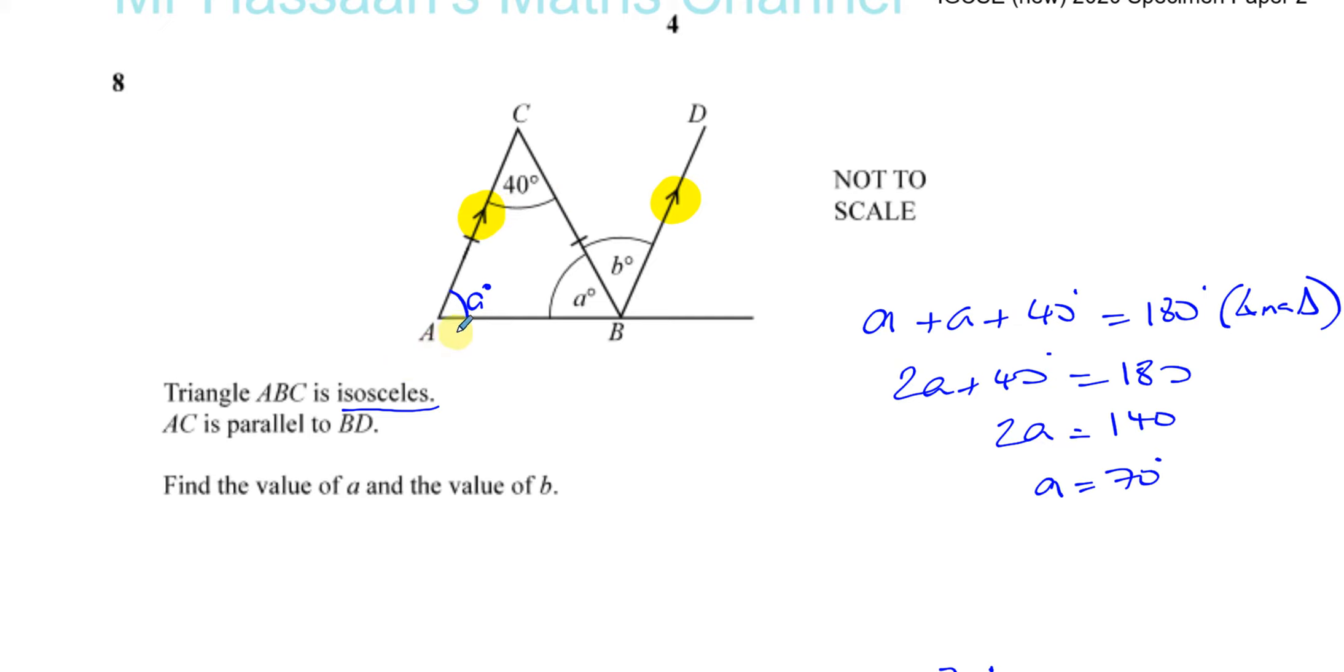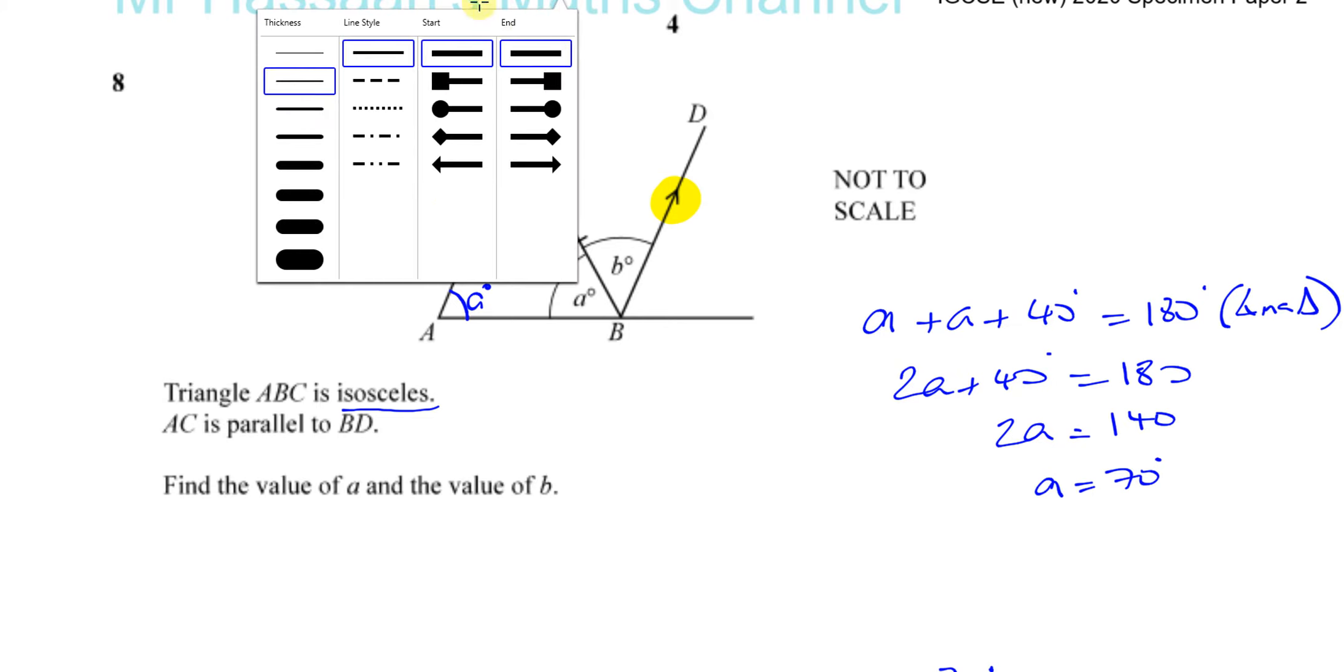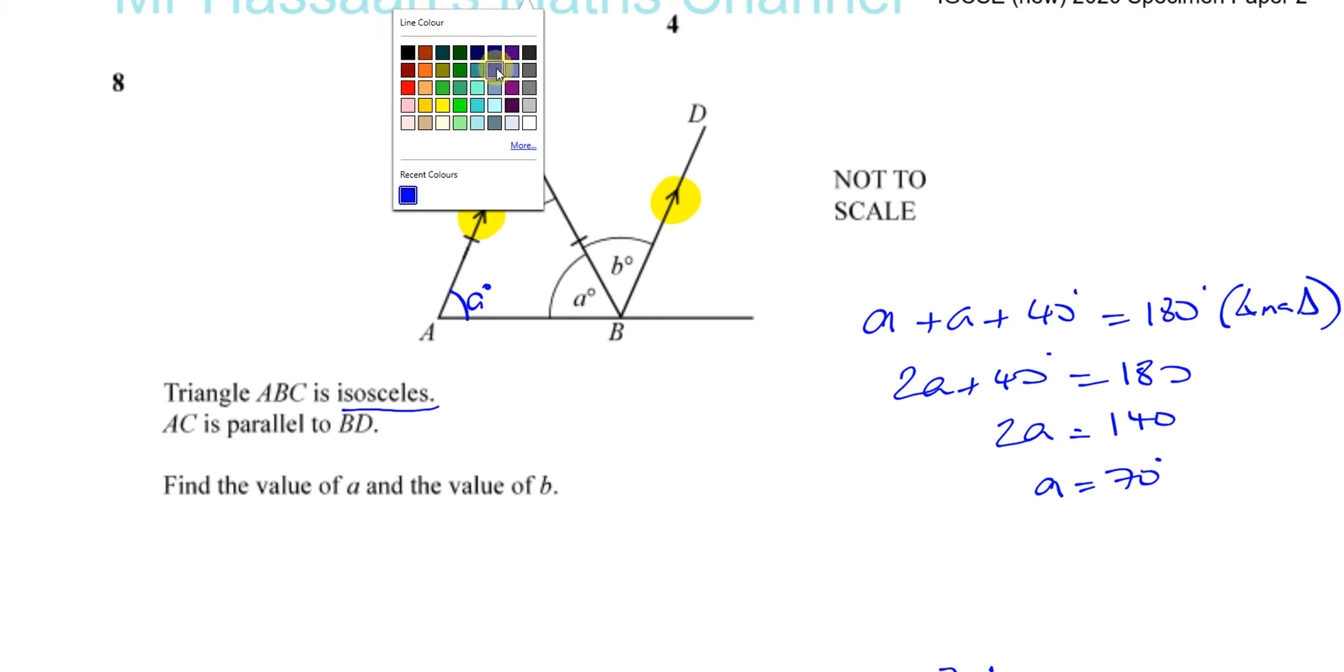But the easiest way probably is the fact that you have what's called a Z shape here. I'll just draw it here for you. Let me make it a different color. Just for you to see, you've got this line here, this line here, and that line here. They make like a Z shape.